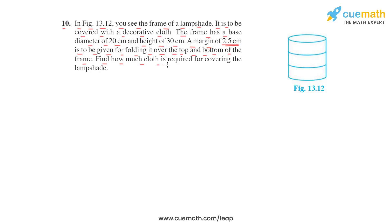Find how much cloth is required for covering the lampshade. So, this is the lampshade and it is to be covered with a decorative cloth, and that cloth needs to be folded on the top side and on the bottom side, and 2.5 cm of margin is required for that on the top as well as on the bottom.